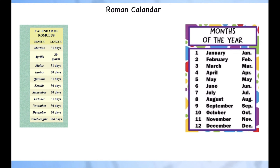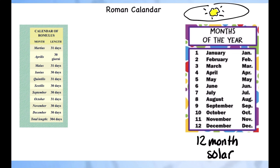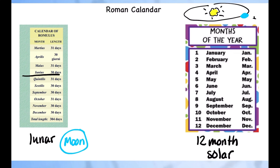Our calendar has 12 months and it's a solar-based calendar, meaning we look at how long it takes for Earth to go around the sun, which takes 365 days. The Roman calendar back then was a lunar calendar, meaning they looked at the moon and how often they saw the moon come back in the sky. The moon takes 30 to 31 days, and that's how this calendar came about.